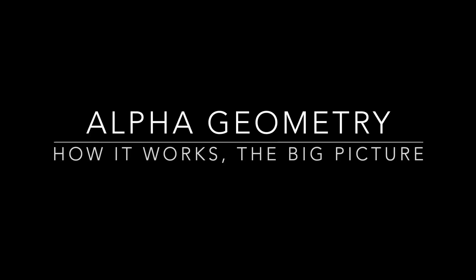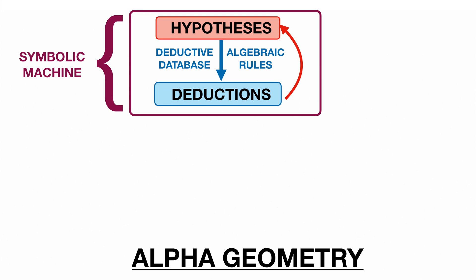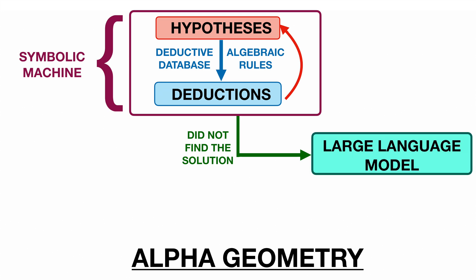AlphaGeometry: how it works, the big picture. So overall AlphaGeometry is composed of two elements, a symbolic machine that we just described and a transformer based large language model. When given a problem to solve, that is a set of hypotheses and a conclusion to prove, AlphaGeometry first uses the symbolic machine on the set of hypotheses and makes deductions. If it didn't reach the desired conclusion, then it will use the large language model to generate an auxiliary construction.